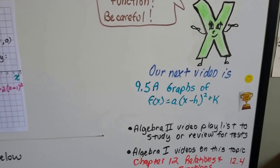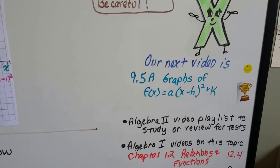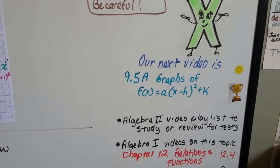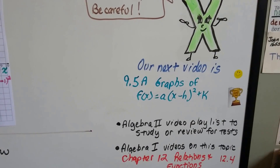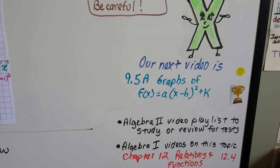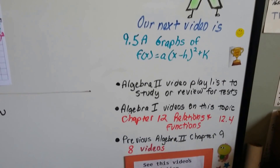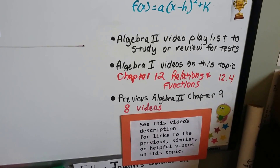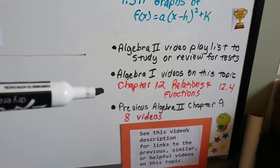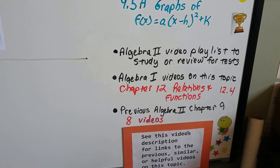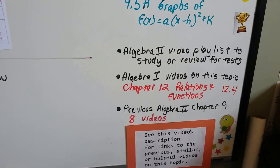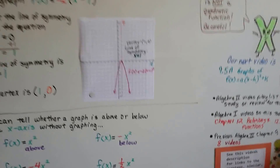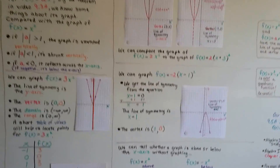Our next video is 9.5a, where we'll talk about graphs of f(x) equals a times the square of the quantity (x minus h) plus k. This video will be added to the Algebra 2 playlist, with links to Algebra 1 back in Chapter 12 on relations and functions, graphing functions, and the previous eight videos in Chapter 9, all in the description.